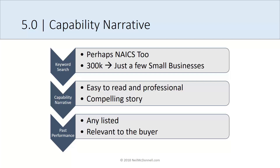To tie this to previous lessons — once a buyer likes your capability narrative, you can see with this bottom bullet, they further shrink the list of small businesses by past performances, and those are listed at the bottom of the DSBS profile. You remember that from an earlier lesson. Make sure that's up to date with any past performance you have that can be helpful to them.